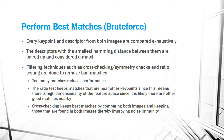The next step after key point and descriptor extraction is to perform matching using BruteForce. Every key point and descriptor from both images are compared exhaustively, and descriptors with the smallest Hamming distance between them are paired up and considered a match. Filtering techniques such as cross-checking symmetry checks and ratio testing remove bad matches. The ratio test keeps matches near other key points, indicating high dimensionality of the feature space. Cross-checking keeps best matches found in both images, improving noise immunity.